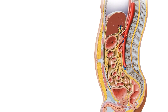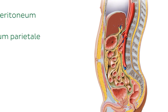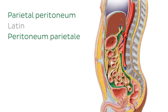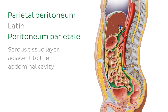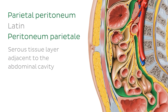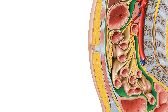The first of these two layers is the parietal peritoneum. This is a serous tissue layer adjacent to the abdominal cavity, and in this image we can see it along the boundaries of the abdomen. The parietal peritoneum is sensitive to pressure, and pain found here is well localized, unlike pain in the second layer of peritoneum.